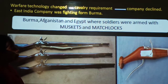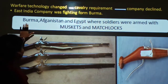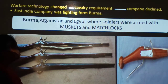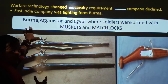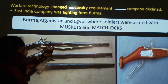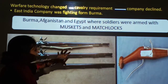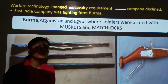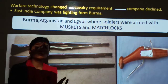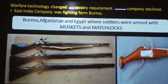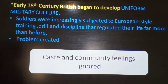The East India Company was fighting wars in Burma, Afghanistan, and Egypt, where soldiers were armed with muskets and matchlocks. The Company fought these battles with the help of muskets and matchlocks. Soldiers fighting with swords and archery alone would not be enough against such firepower.